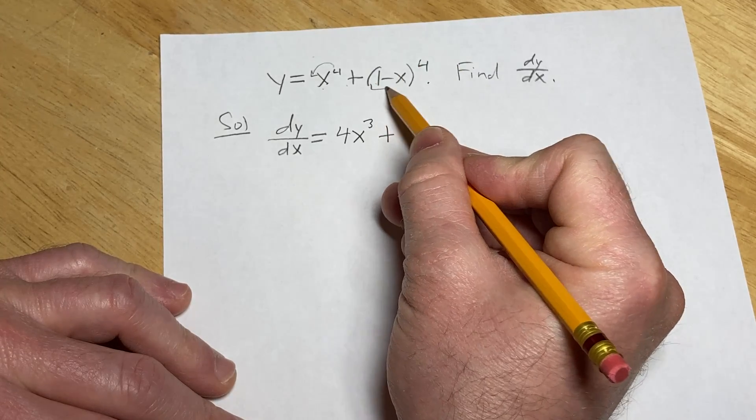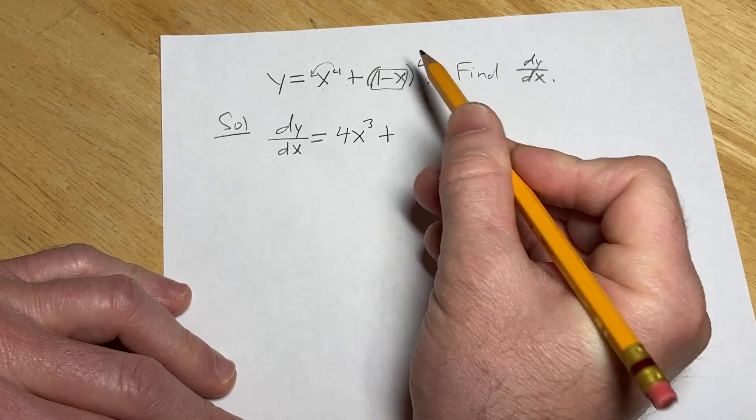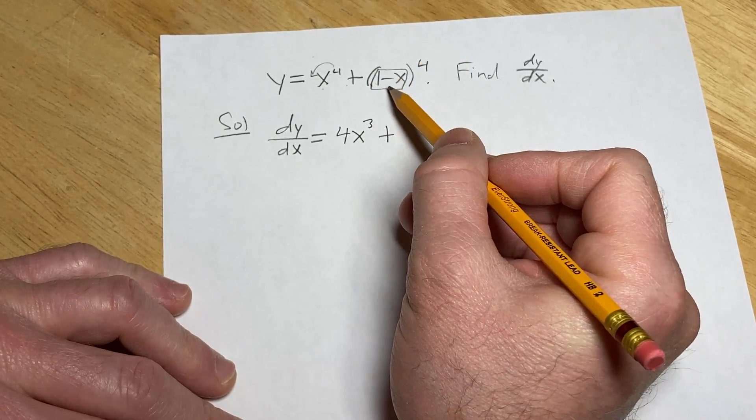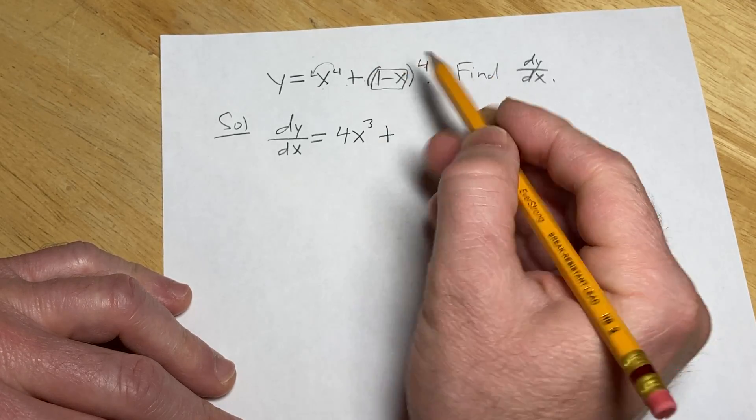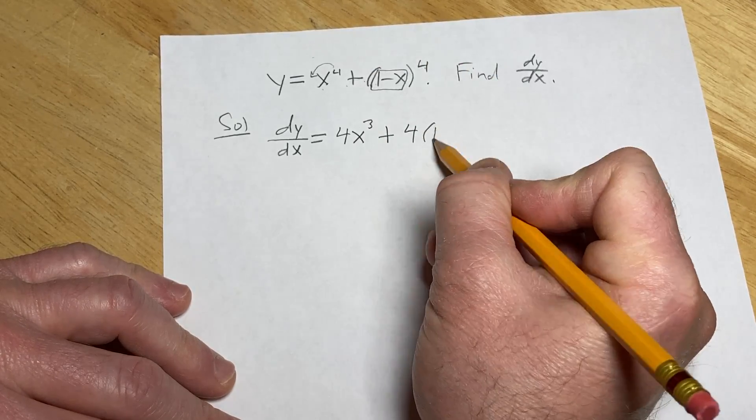Plus, here we do the same thing except we have an inside function. So whenever you have an inside function like this, you have to use what's called the chain rule. You take the derivative of the outside, leave the inside untouched,